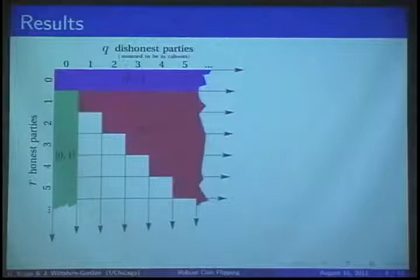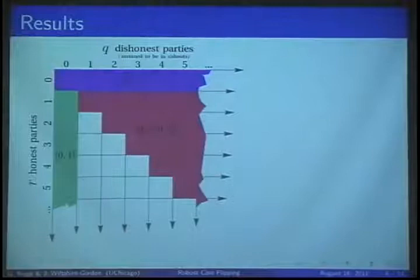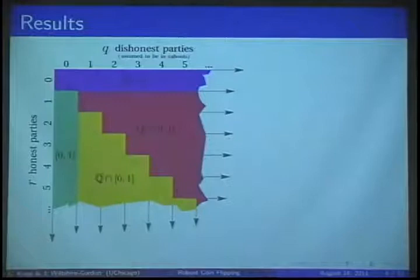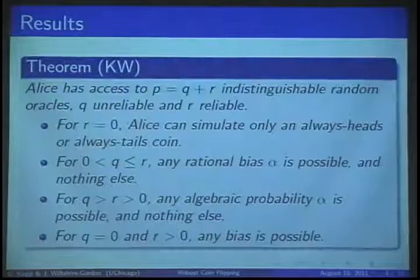If the honest parties do not form a majority, we've shown that rational and only rational probabilities are possible. If there is an honest majority, all algebraic number biases may be generated as well and nothing else. Here's the same thing in words as a theorem.